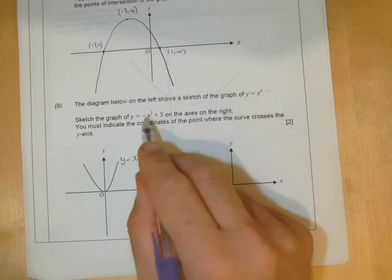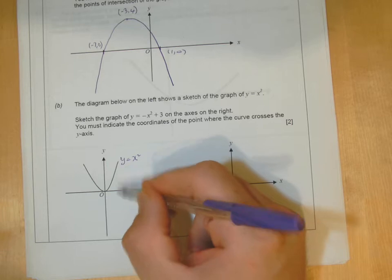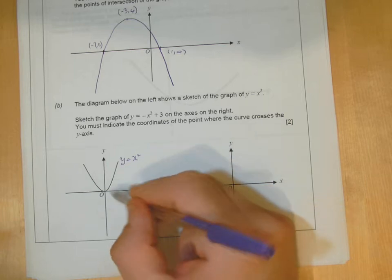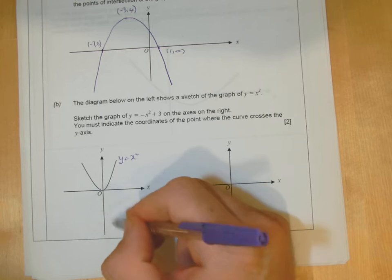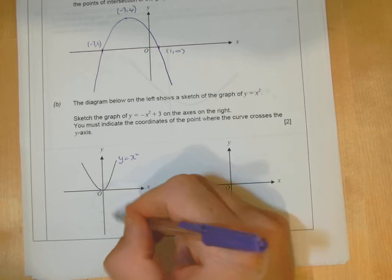and you put a minus in front of them. So for instance, that's three there, you're going to put minus three. So it reflects in the x axis. You're going to get an unhappy face there, so that's what minus x squared is.